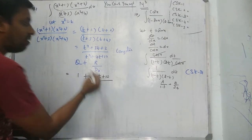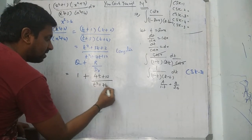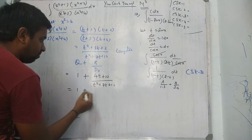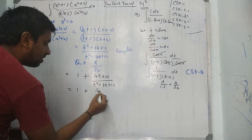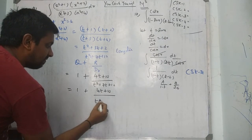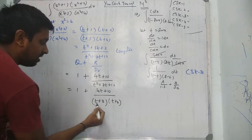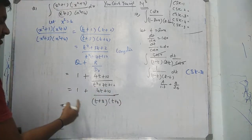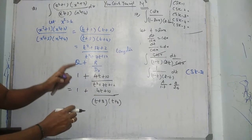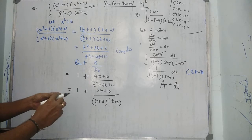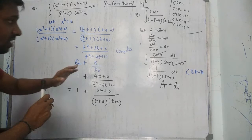So we get 1 plus (4t + 10) over (t² + 7t + 12). Now simplify again — t² + 7t + 12 factors as (t + 3)(t + 4). This can still be simplified by partial fractions. But note: you should not integrate yet — you must substitute back x² in place of t before integrating.